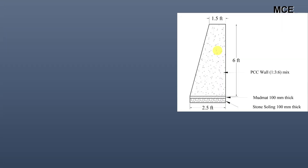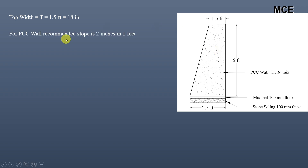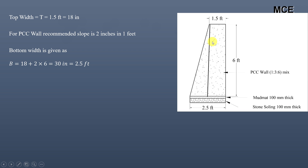In US conventional units, the top width is 1.5 feet or 18 inches. For a PCC wall the recommended slope is again 2 inches in 1 foot — you can also use 1 inch or 1.5 inches per foot depending on conditions, but 2 inches per foot is recommended. Dividing the shape into a rectangle (18 inches) and a triangle, the triangular base equals 2 times the height in feet.